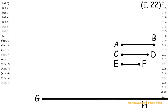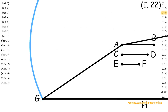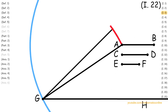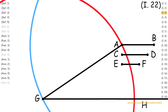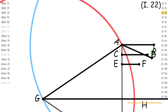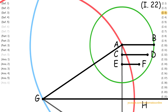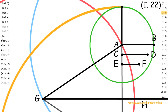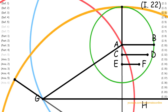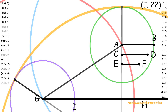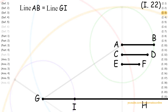First, with line AB and line GH, we apply Proposition 3. From this, we get line AB is congruent to line GI.